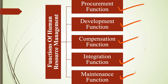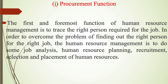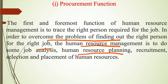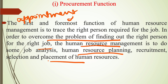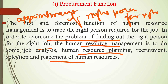The first function is the procurement function. The first and foremost function of human resource management is to find the right person required for the job. To overcome the problem of finding the right person for the right job, HRM carries out job analysis, human resource planning, recruitment, selection, and placement of human resources. Appointing the right person for the right job is the main function of human resource management.